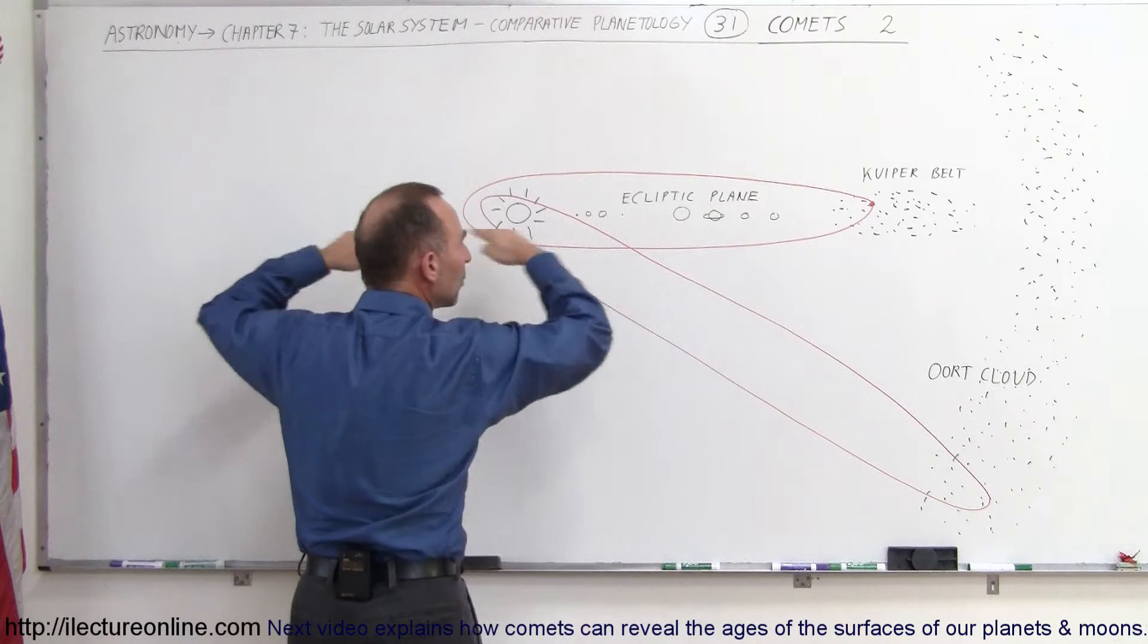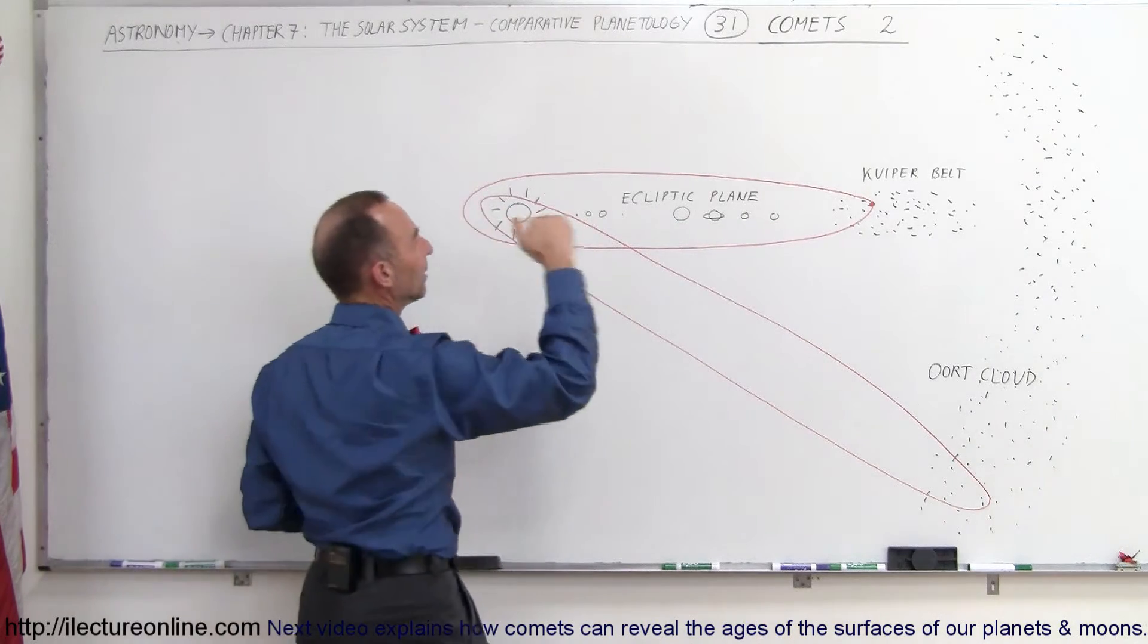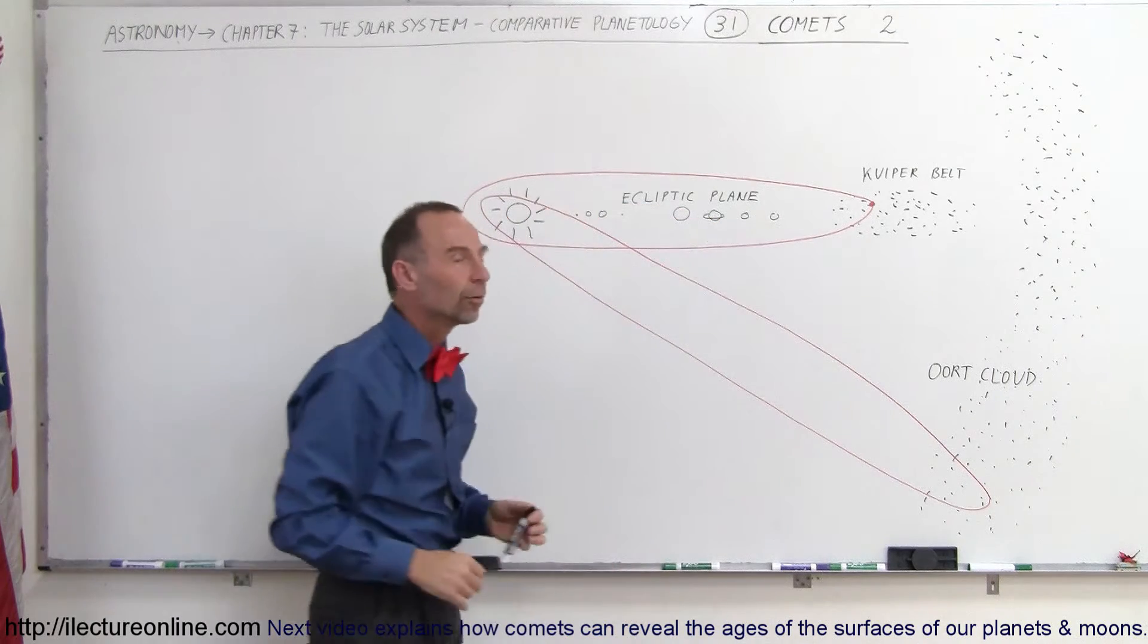The other side, all the way around, but it's situated in what we call the ecliptic plane. It forms pretty well a region around the Sun in the same flat ecliptic plane as the eight planets and the moons of the planets.